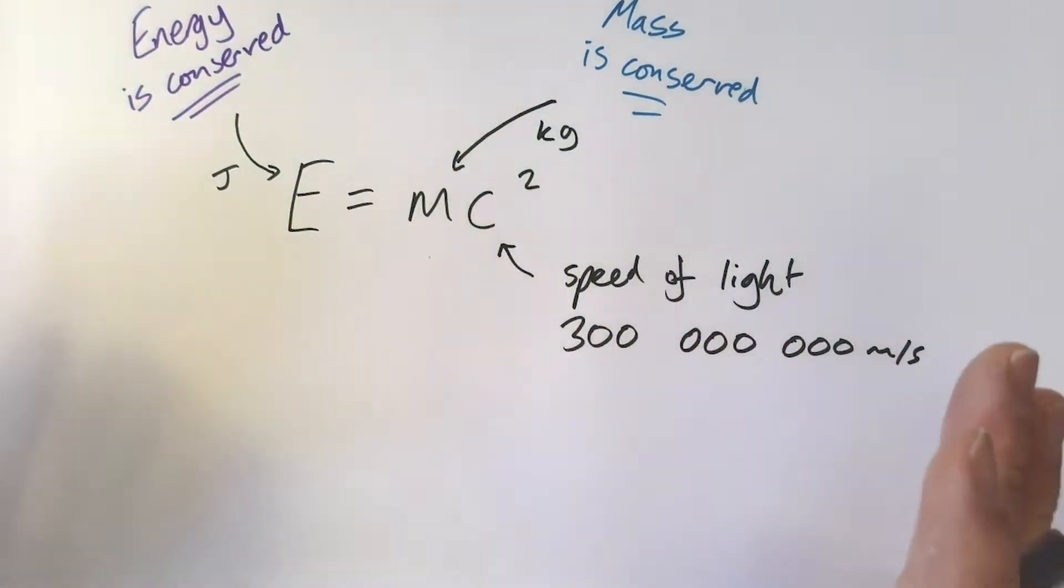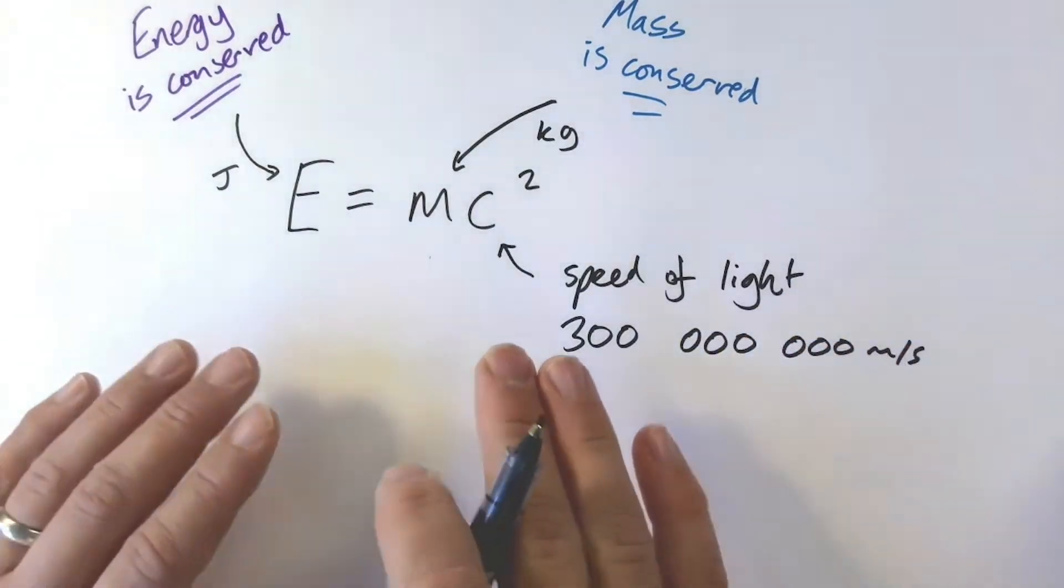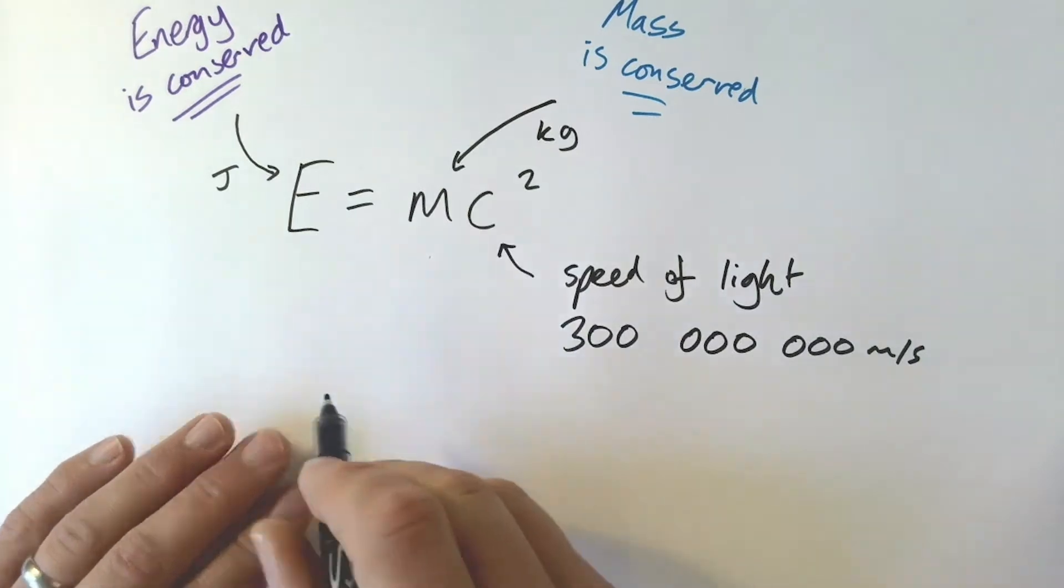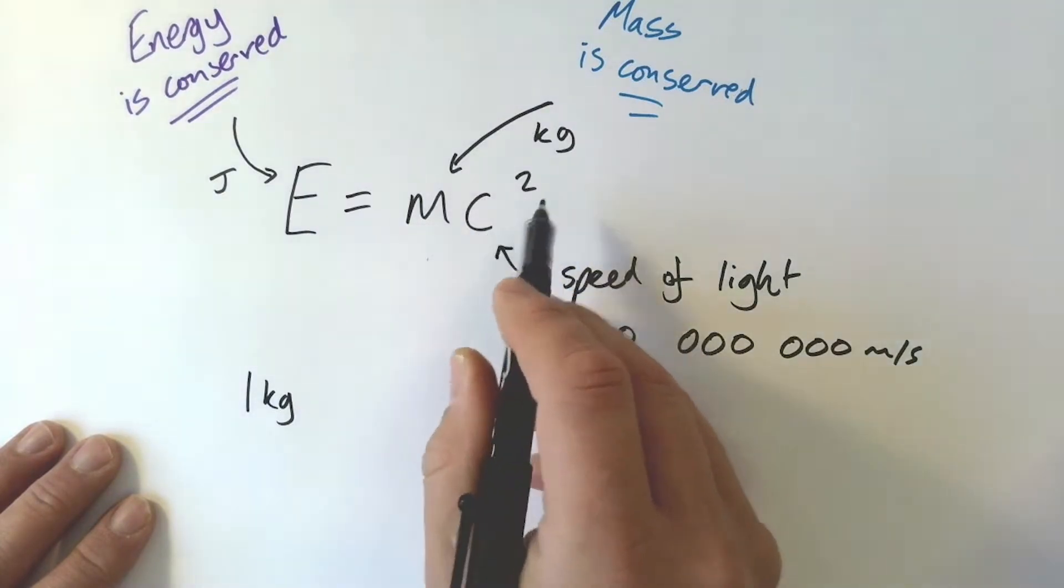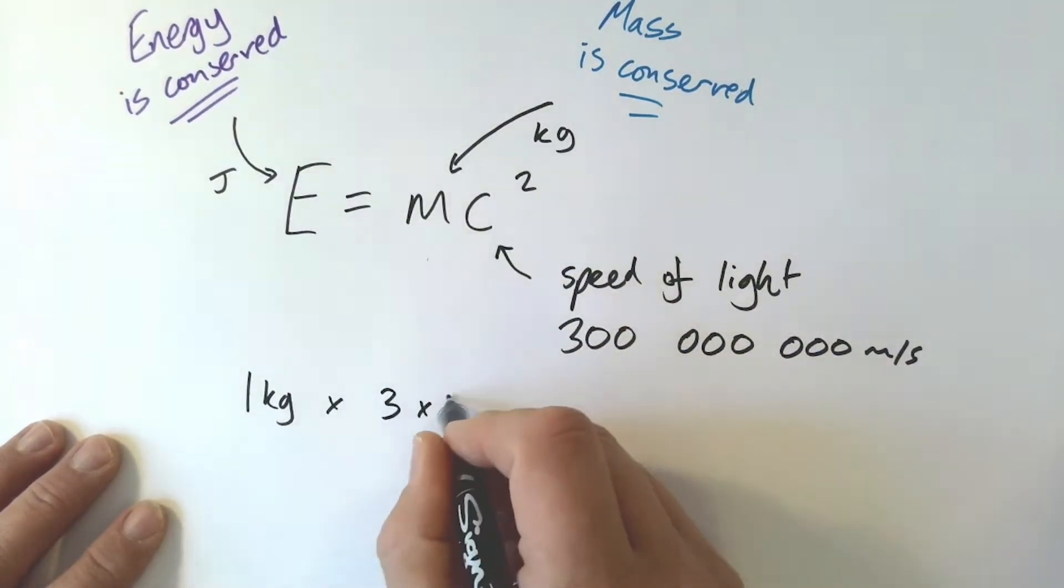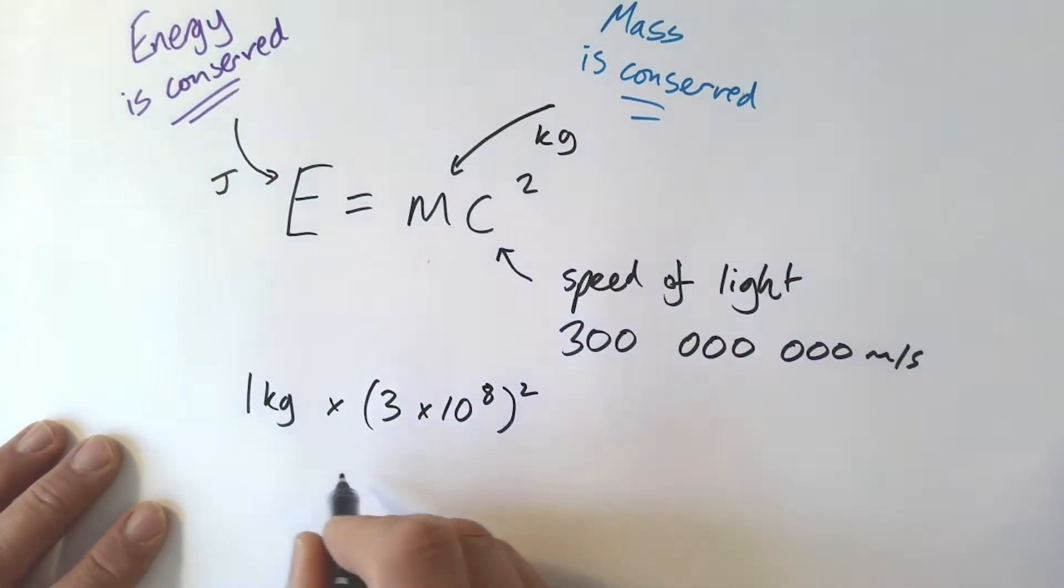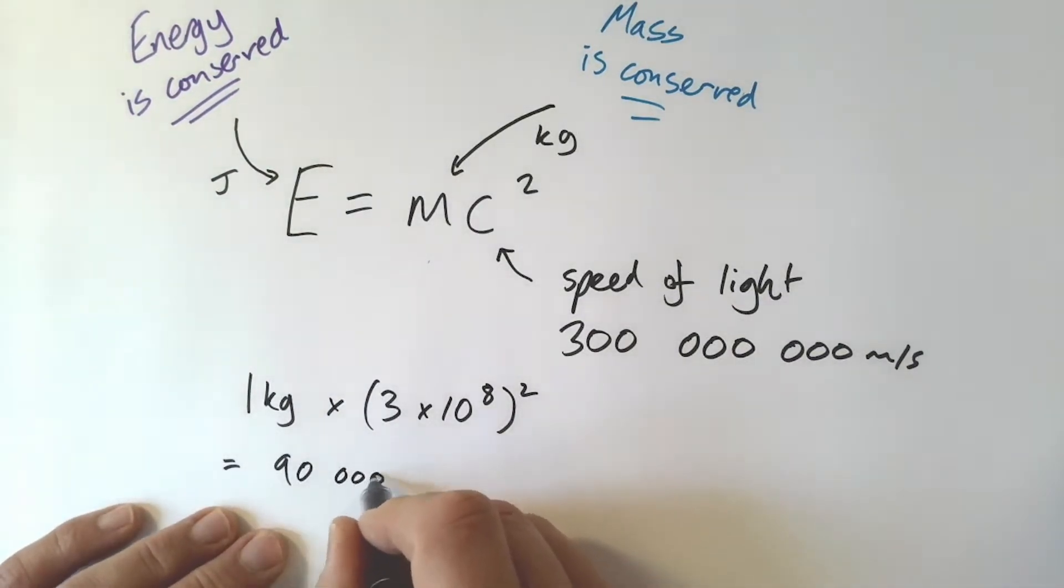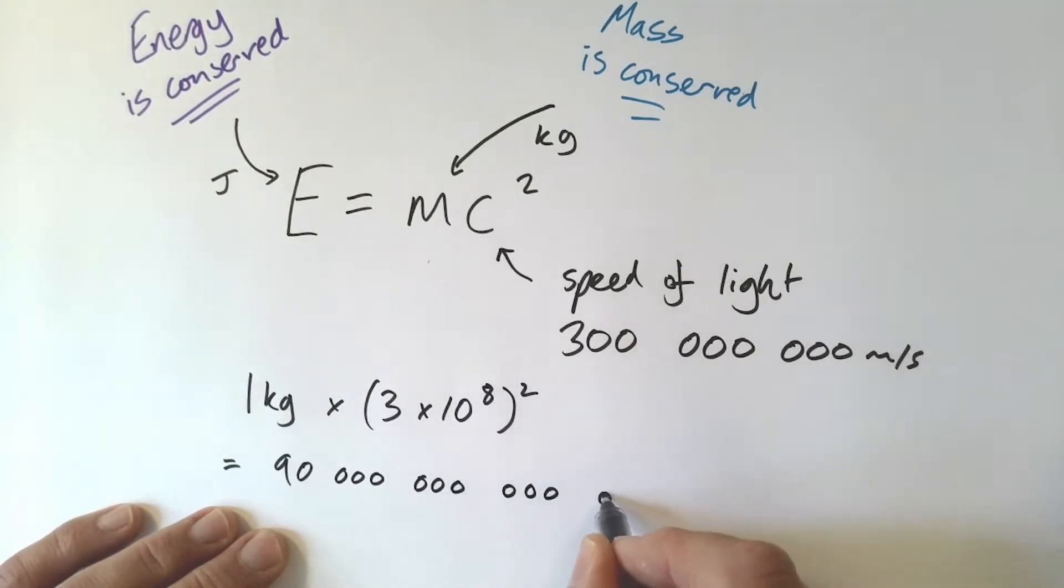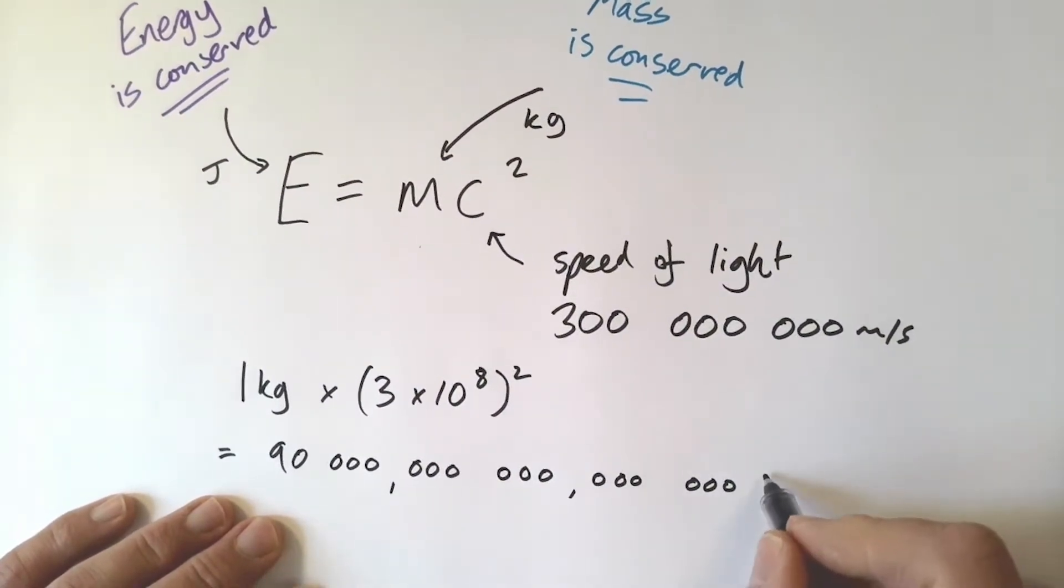So what does that mean? How can we convert? Well as I say we can't do it easily but in a nuclear power station we can convert some mass into energy. What would happen if we converted one kilogram of mass into energy? One kilogram times the speed of light squared, so that's times 3 x 10^8 squared, and the answer to that is nine followed by sixteen zeros. That is 90,000 trillion joules of energy. So converting one kilogram of mass into energy gives us 90,000 trillion joules of energy.